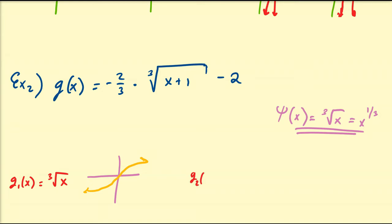Now g2(x) — what transformation should we do next? Let's do the horizontal shift first, as that's the safest one to do. So g2(x) = ∛(x+1). We're going to shift it to the left 1. Remember: plus means left, minus means right, when it's affecting the domain value.